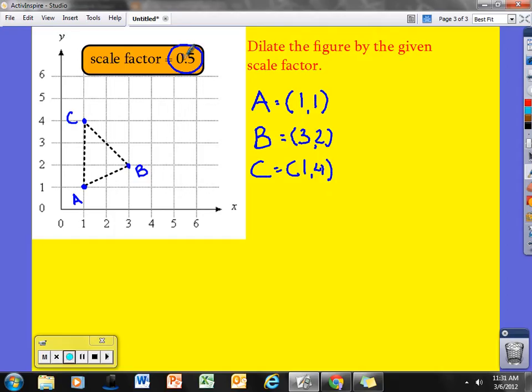Now, it says to multiply by a scale factor of 1 half. Remember if the scale factor is less than 1, we are reducing in size. We are reducing the original figure. If it's greater than 1, then we are enlarging. This one you should be able to tell by now that we are reducing this.